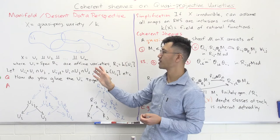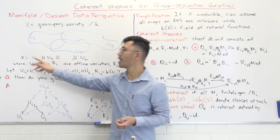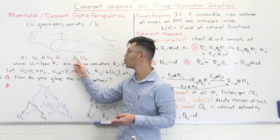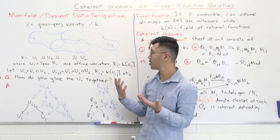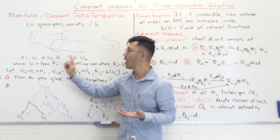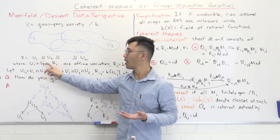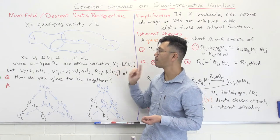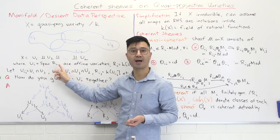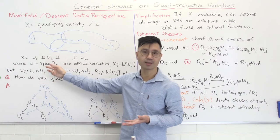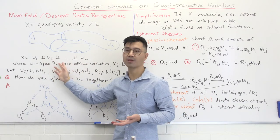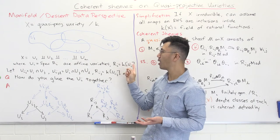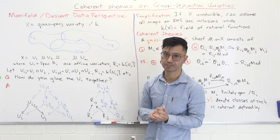We're going to assume X is the union of open subsets U₁ up to Uₘ, and these are all going to be affine varieties. Let the coordinate ring of affine variety Uᵢ be Rᵢ, so we write Uᵢ = Spec Rᵢ. If you know about schemes, you can think of this as a scheme; otherwise, just think of it as the corresponding variety whose coordinate ring is Rᵢ.